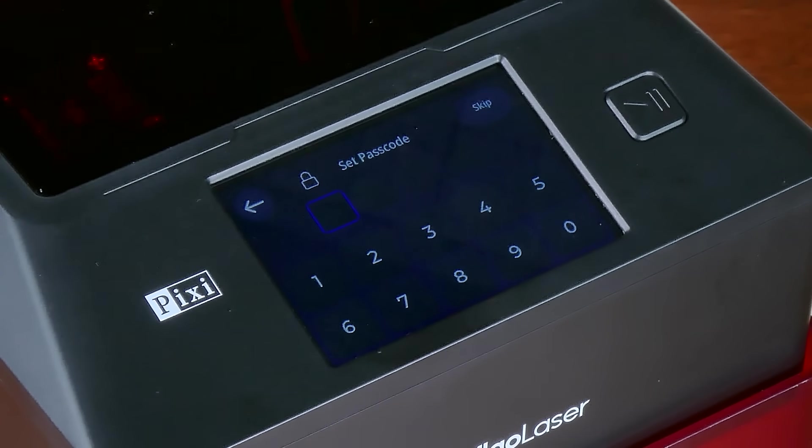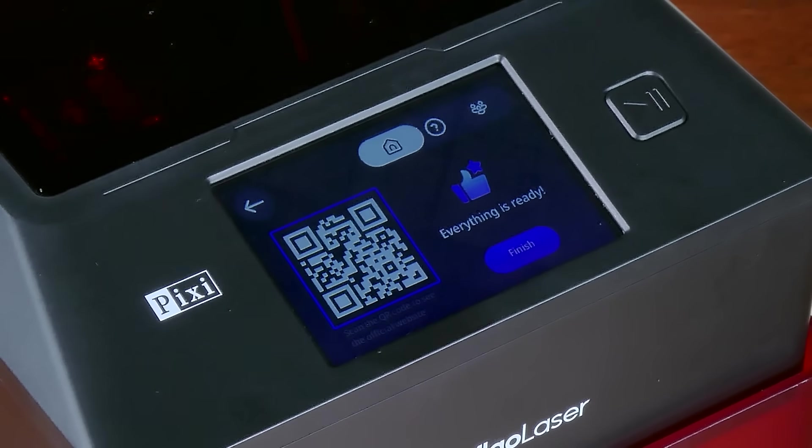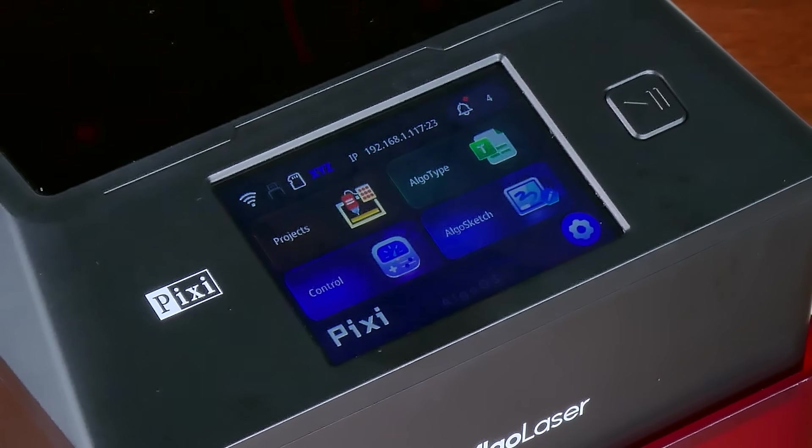We then can set a password to avoid any kids accessing the machine. I don't need to do that because it's in my workshop, so I'll just skip straight through that. This is a QR code so you can use your smartphone with the device, and there we have it. That's all we need to do for the setup.